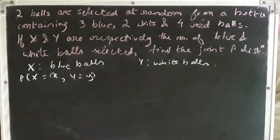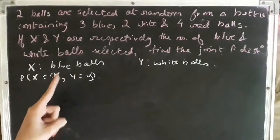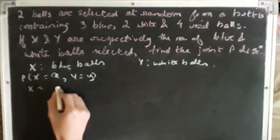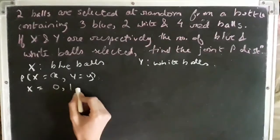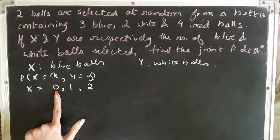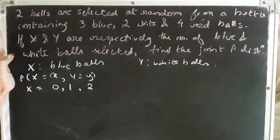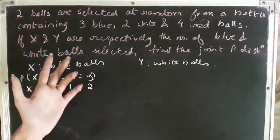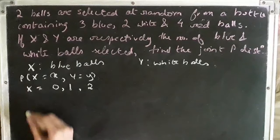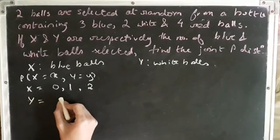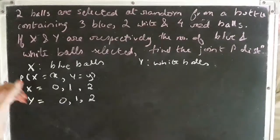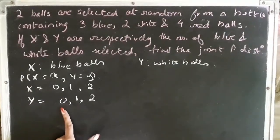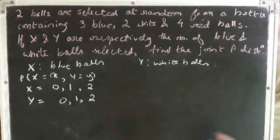We will need to form a table. Let us jot down the values that X and Y can take. The number of blue balls: X can take on the values 0, 1, and 2. X takes on value 0 when any two balls selected do not contain any blue ball — the balls may be white or red. Similarly, Y can take on values 0, 1, and 2: either no white balls, one white ball, or both balls are white.